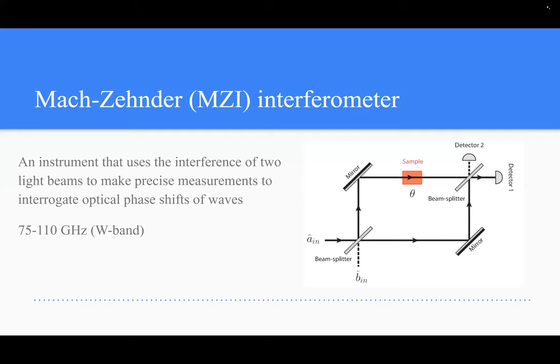So first, I'm going to talk about what exactly a Mach-Zehnder interferometer is. This instrument takes two light beams and uses their interference patterns with different mirrors to make precise measurements about their optical phase shifts. Specifically, I do research about wavelength frequencies in the 75 to 110 gigahertz range, which is W-band.